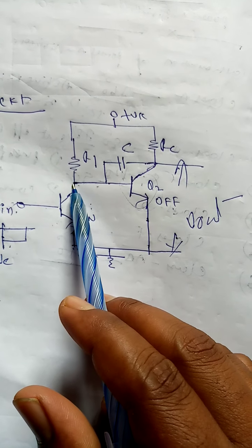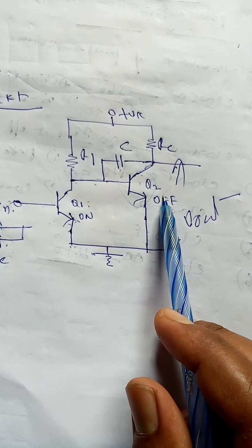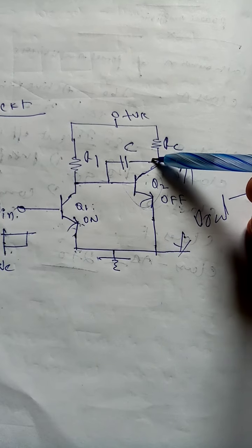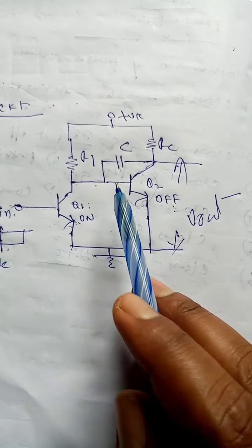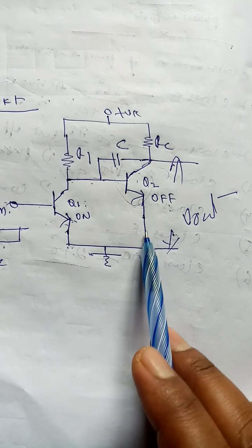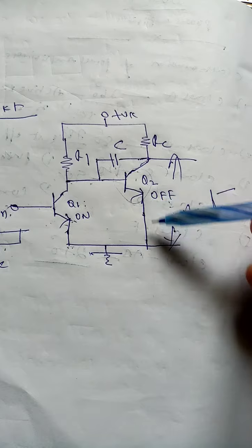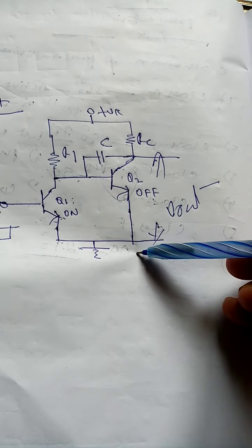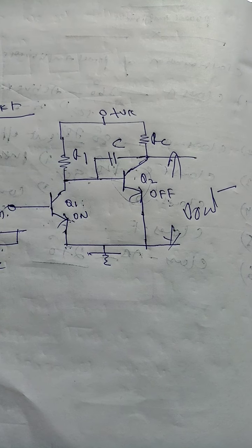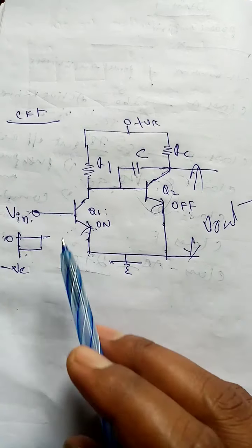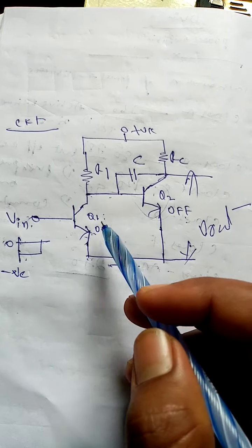Due to Q1 becoming open circuit, the voltage here increases. This causes Q2 transistor to turn on — on stage means it becomes a short circuit. Now the capacitor starts discharging through this path. Based on the tau value, when the negative pulse is removed, Q1 turns on again.